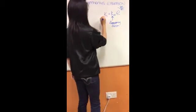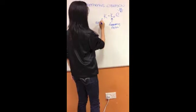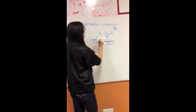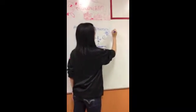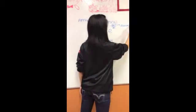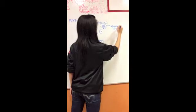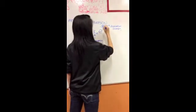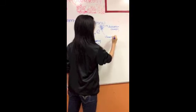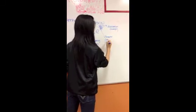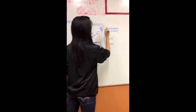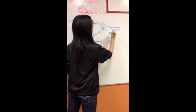K is the rate constant. Ea is your activation energy. R, as you all learned before, is your universal gas constant. And finally, T is your absolute temperature.